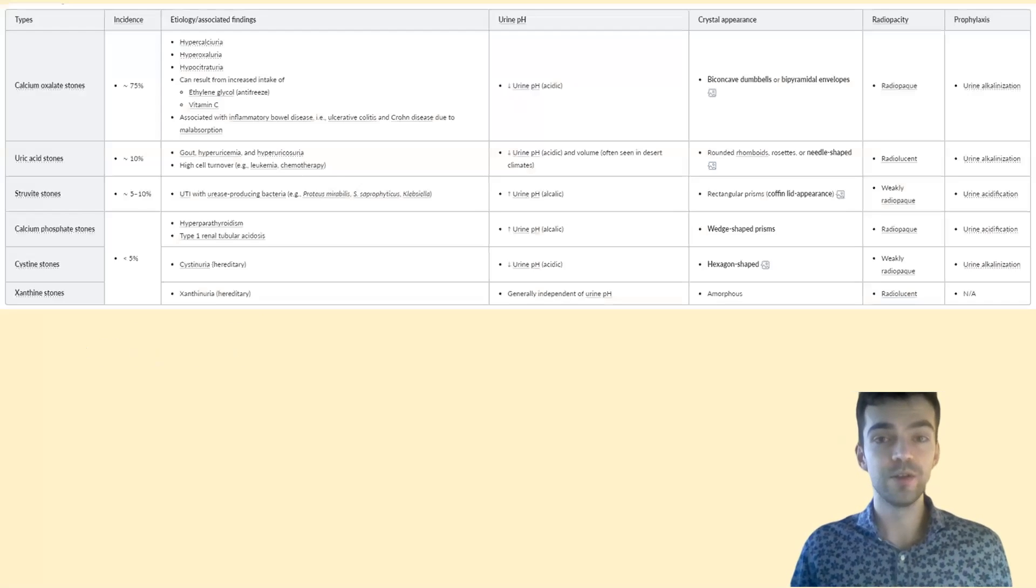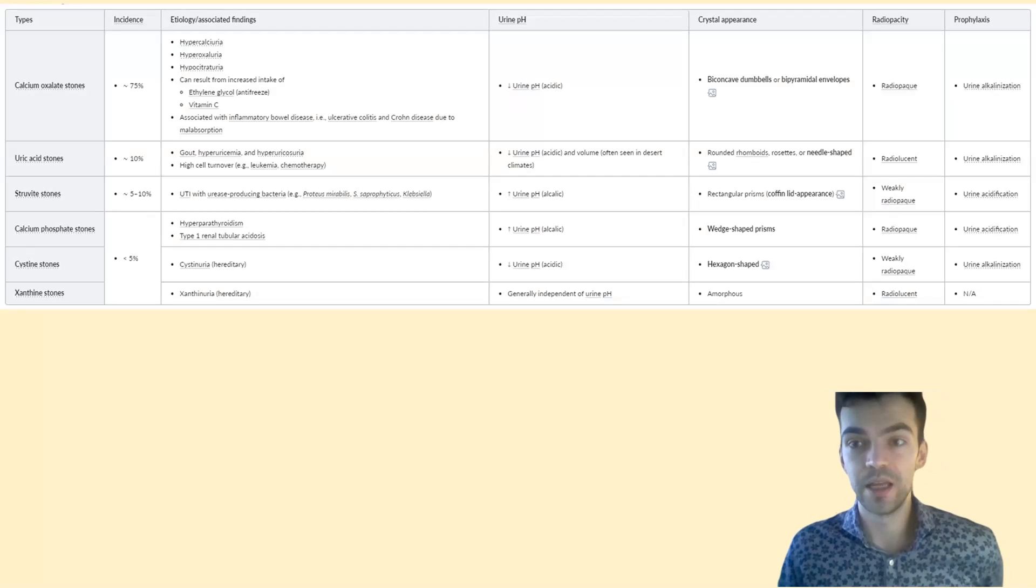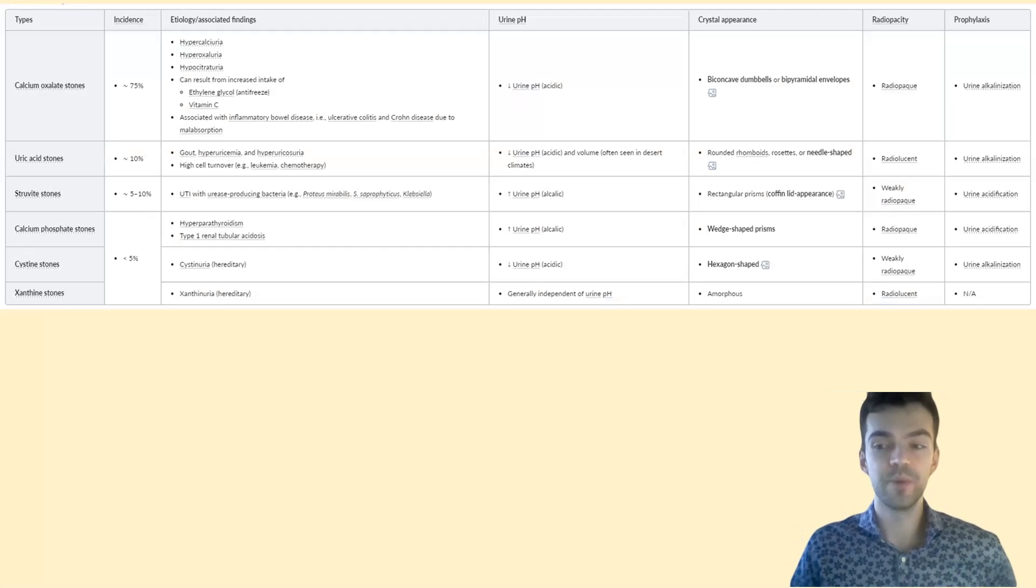Let's move on to our summary slide. Here we have a general summary of all the types of stones we talked about and a little bit about each one. The crystal type and radial opacity refers to if it can be seen on X-ray or not. Radiopaque means it can be, and radiolucent means it cannot. Calcium oxalate, for example, is radiopaque, so you can see it on X-ray. I hope this video was helpful and you gained some information from it. I'll see you guys in the next one.